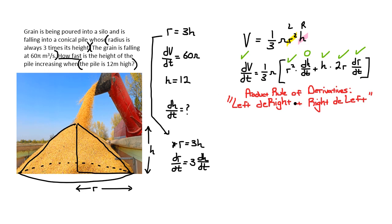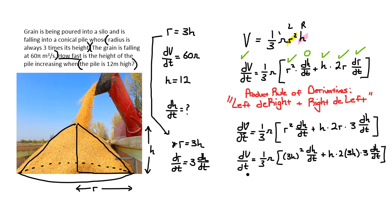All that remains is to plug in and substitute. The first thing I'm going to plug in is dr dt. So I'll go through all these steps here. dv dt, a third pi, a bracket, r squared, dh dt, plus h times 2r. And now instead of dr dt, we'll put times 3dh dt. Nice. I'll take a run through this, and I'll plug in the r's as well. Actually, I think I'll just replace everything that I know.